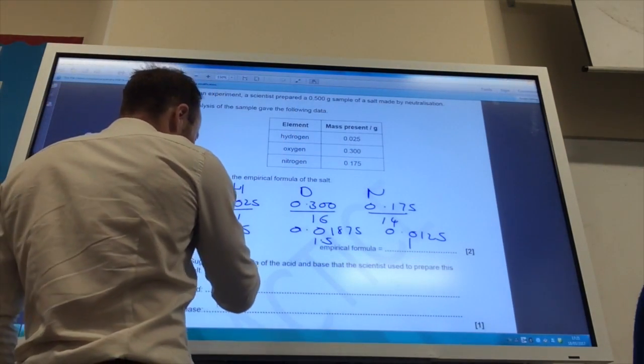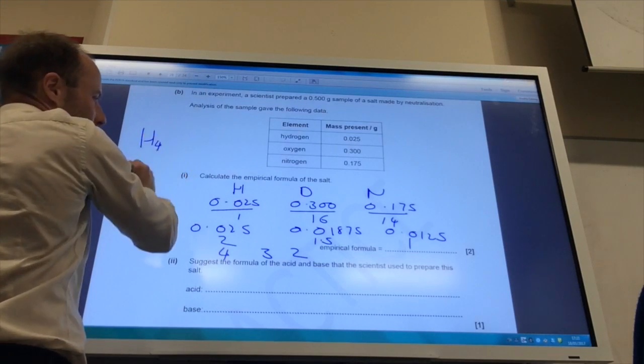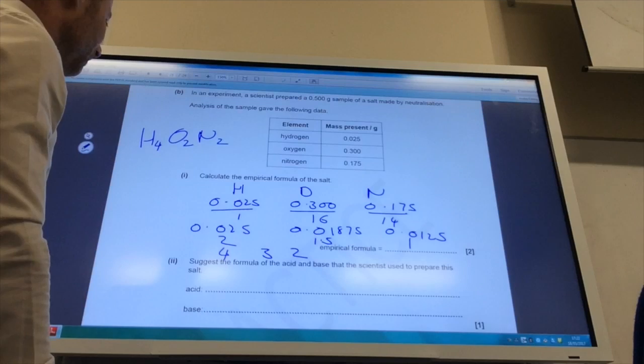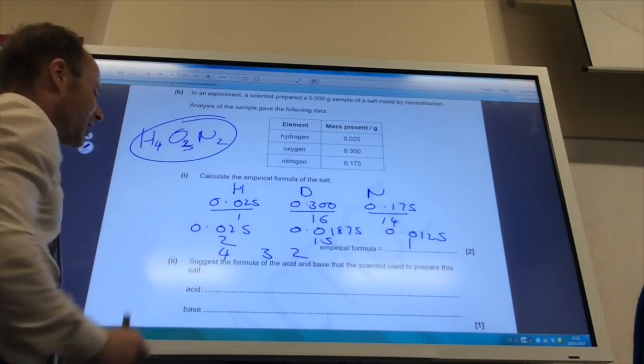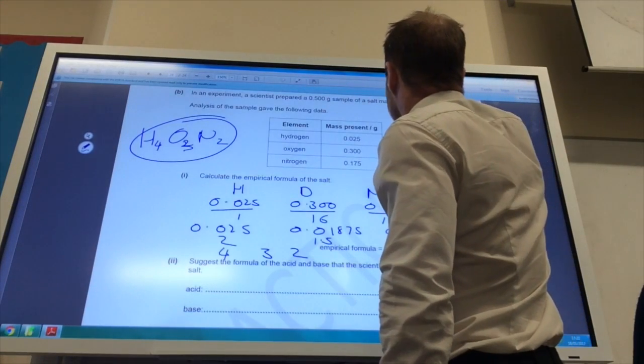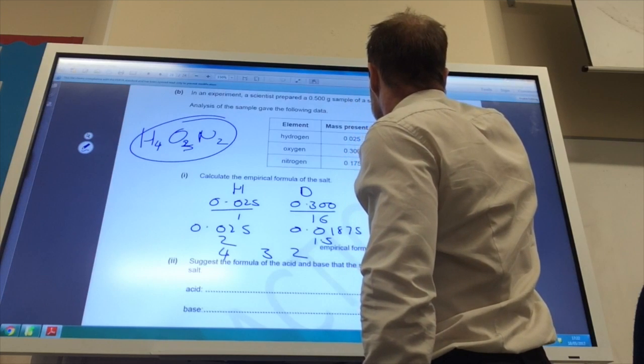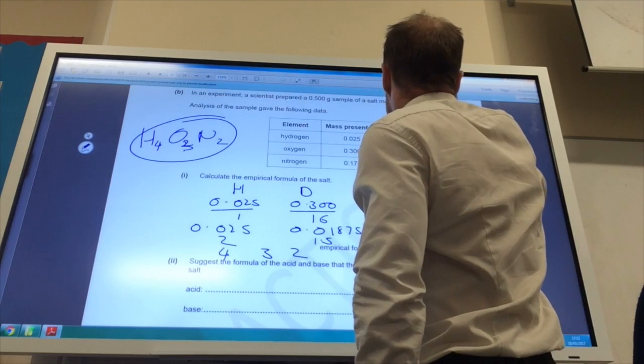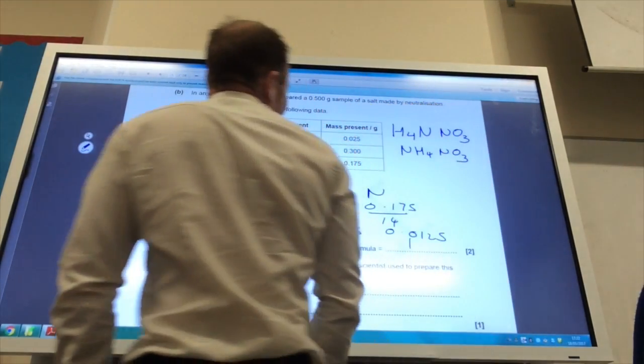So the empirical formula is H4O3N2, like so. So how could I rearrange that into a more reasonable formula? Well, you're looking for, if I take the hydrogens, I've got H4, take the N the other side, and then I have got H4N, and then NO3, so alternatively NH4NO3, which is of course ammonium nitrate.